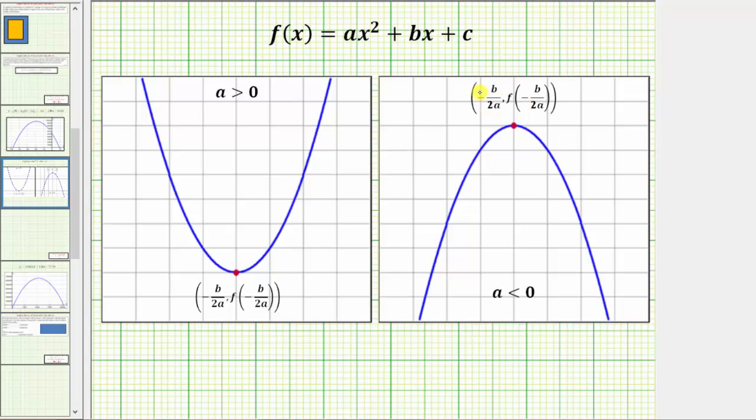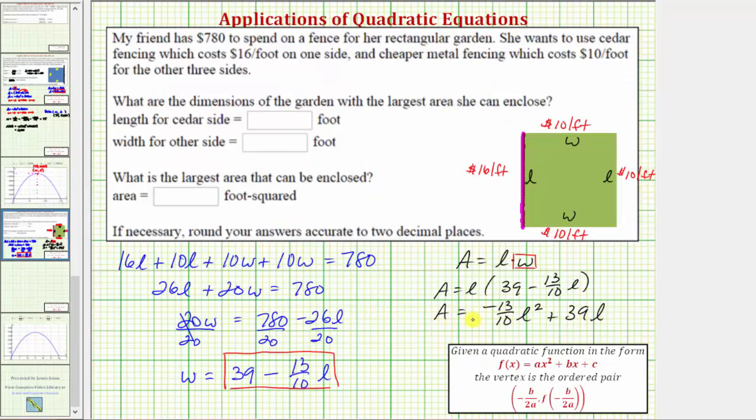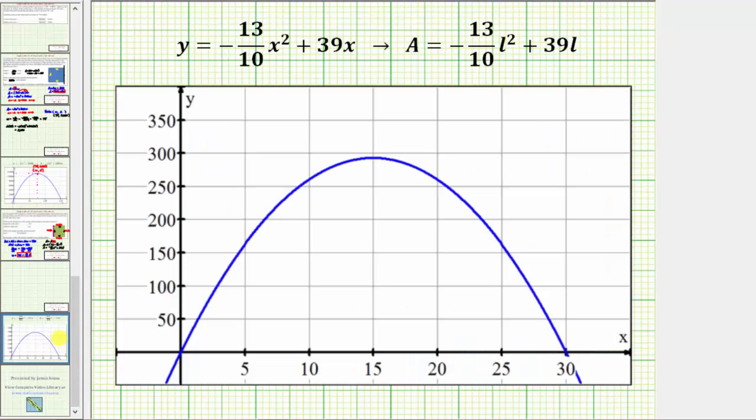Looking at the graph of our area function, because we're trying to maximize the area, we need to find the vertex, which is the high point of the graph. The first coordinate of the vertex gives us the length that maximizes the area, and the second coordinate will give us what the maximum area would be.